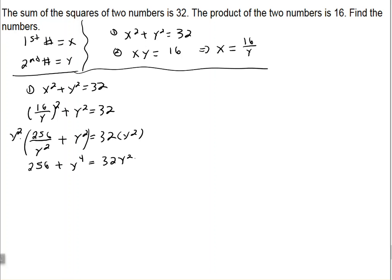So since I have this y to the fourth in my equation, let's get everything on one side. And if y to the fourth in 32 y squared, let's subtract that 32 y squared over to the left-hand side.